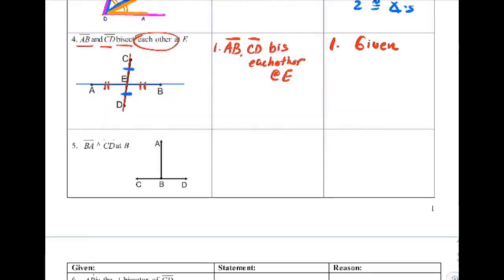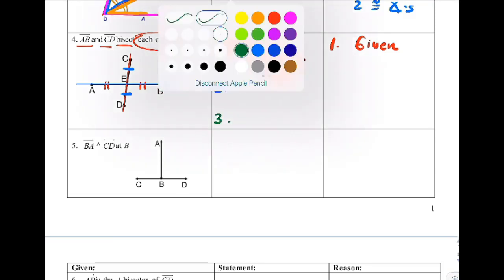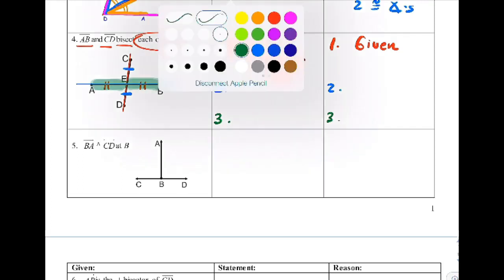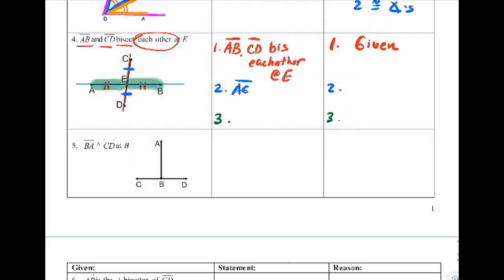But what does that tell me? I know two more things. I know a second sentence, and I know a third sentence I can say. The first thing is that AE is congruent to BE, because a bisector divides a segment into two congruent segments.